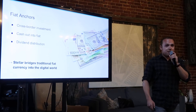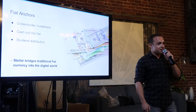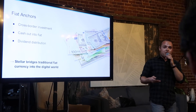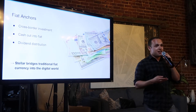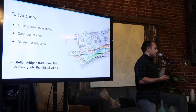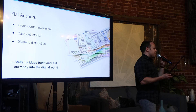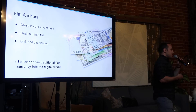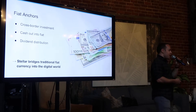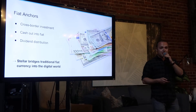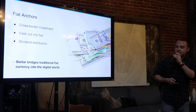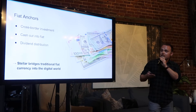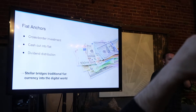The next point revolves around fiat anchors. As many of you know, Stellar's core focus is on working with financial institutions to onboard fiat currencies onto the network. If you look at Stellar today, you'll find that it's a ledger that has real fiat currencies backed by actual financial institutions — so you have euros, Nigerian naira, Japanese yen, things like this.